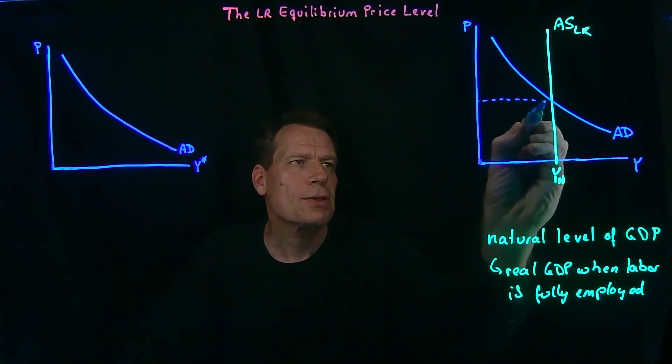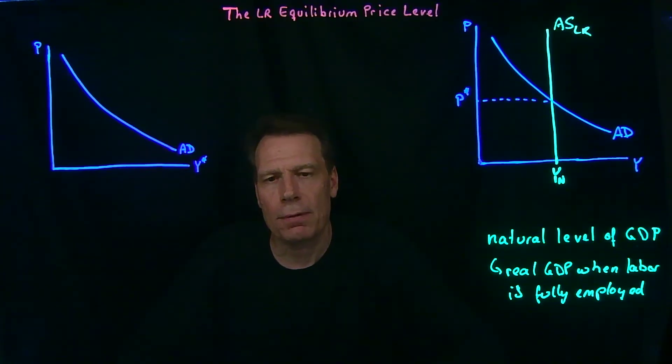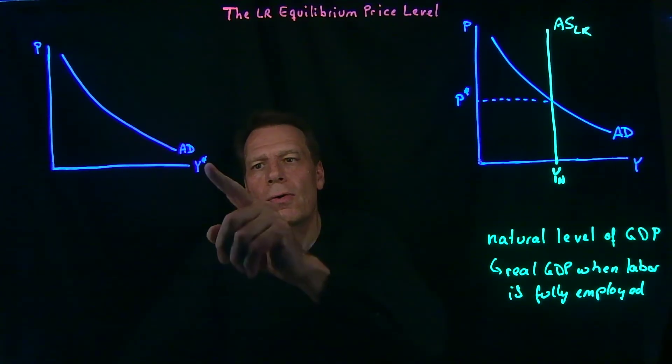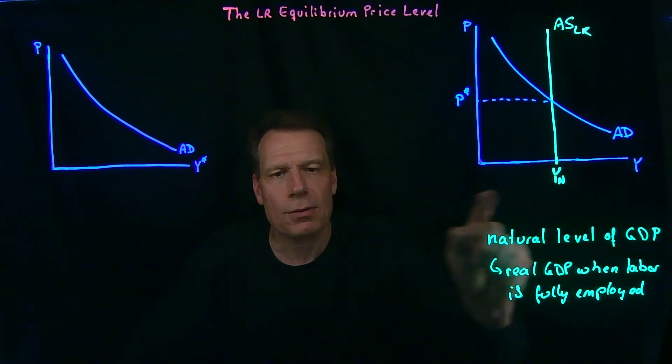And at that intersection, we get the long run equilibrium price level. The price level that equilibrates the economy in the long run. That causes the long run equilibrium GDP to be equal to the natural level of GDP.